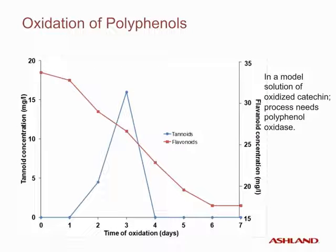When polyphenols are oxidized, the flavonoid concentration decreases and correspondingly the tannoid concentration increases. In a model solution that did not contain protein, the tannoid concentration increased for up to three days, and then, because they did not have any protein to complex with, the tannoids became larger and larger and eventually dropped out of solution.